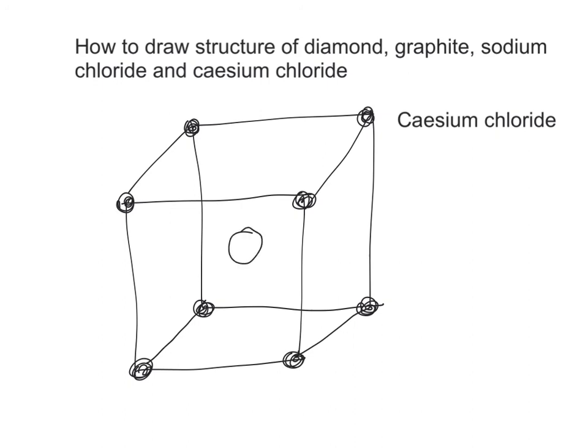You can see each cesium ion is surrounded by eight chloride ions, and vice versa. Lastly, include the key.